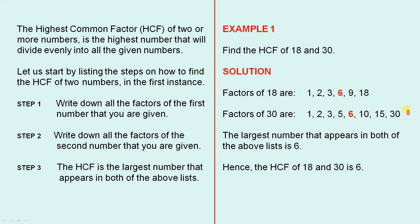The factors of 30 are 1, 2, 3, 5, 6, 10, 15, and 30. The largest number that appears in both of the above lists is 6. Hence, the HCF of 18 and 30 is 6.